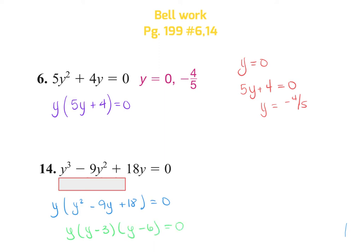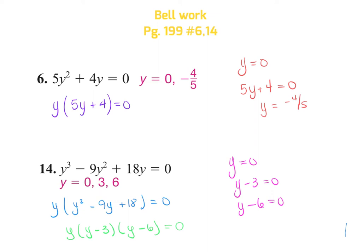They have to multiply to give me positive 18 and add to give me negative 9. Now that I've done that, I can go back through and set those equal to zero. The y is already solved. Then I'm going to set each one of these equal to zero. You're going to see that y equals zero. Add the 3 over, you get positive 3. Add the 6 over, you get positive 6. So those would be your answers for that one.